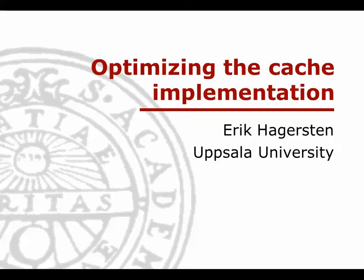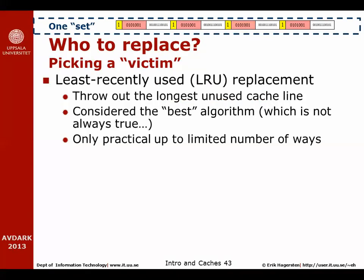The first thing we're going to talk about is replacement. Given that you have a set-associative cache — in this example a four-way set-associative cache — and assuming that all four places of this set are full and we now want to insert a new cache line into that set, we have to choose which one of these four to replace, or which one should be the victim. A very common algorithm is called the Least Recently Used (LRU) replacement algorithm, where we simply throw out the cache line that has been unused the longest time.